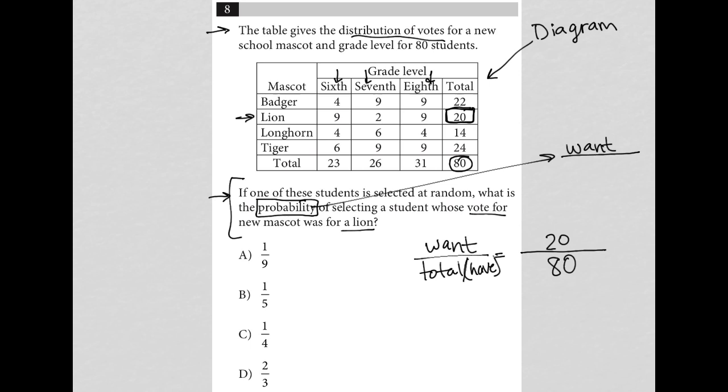So when I simplify that fraction 20 over 80 is really like 2 over 8 and 2 divided by 8 is the same as 1 over 4. So the answer to my question here is choice C.